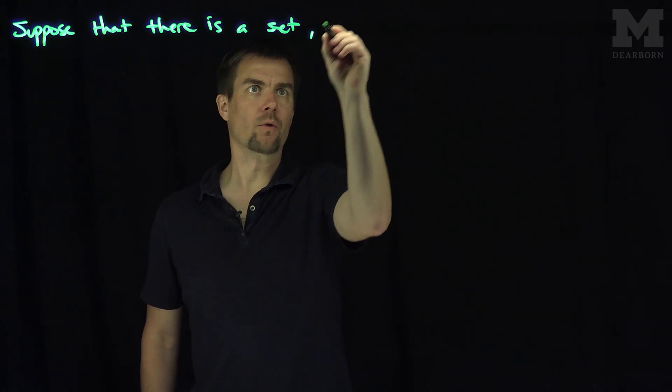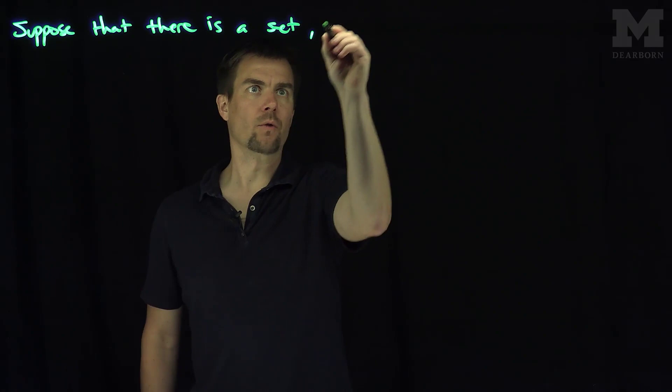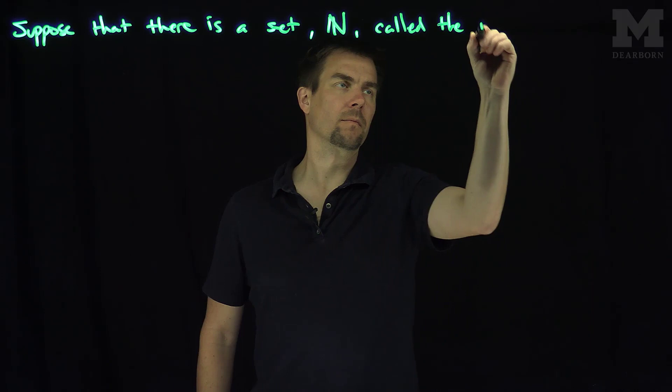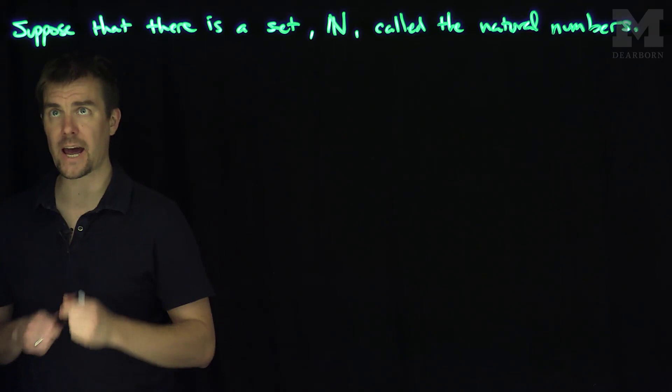We suppose that there is a set N, called the natural numbers. We're going to suppose this set exists. There are five axioms which define this set.